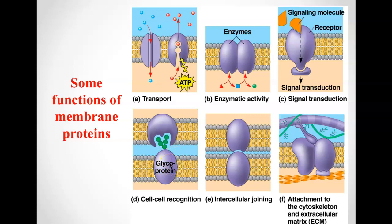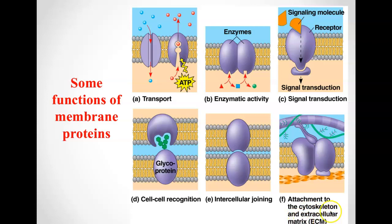We'll talk about blood typing later when we get into genetics. Intercellular joining — tight junctions that exist between your skin cells are proteins embedded within the membrane causing that to happen. And then attachment to the cytoskeleton on the inside, and also to the extracellular matrix. The extracellular matrix, also known as ECM, is made up of chains of proteins and carbohydrates that exist on the outside of the cell for protection.